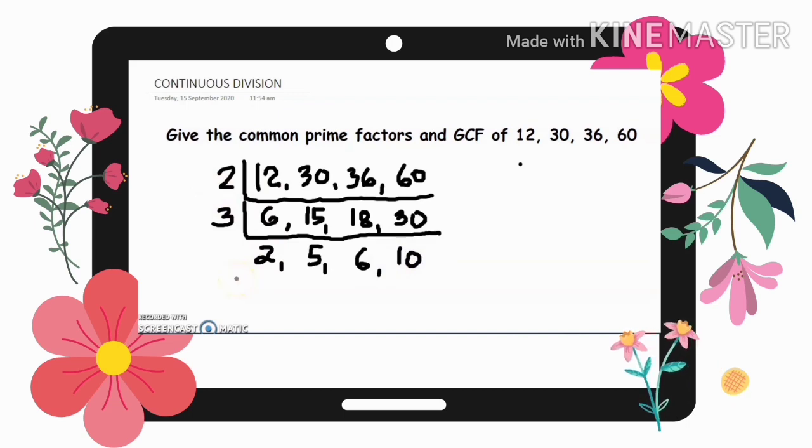Okay. So, meron. Ang 3, ah. 3 is a prime number. Kasi ang factor lang ng 3 ay 3 times 1. Okay. So, think again. Continue natin. 2, 5, 6, and 10. Ang 2, 6, and 10 ay divisible by 2. Pero, ang 5 is not divisible by 2. So, stop na tayo sa 2 and 3.